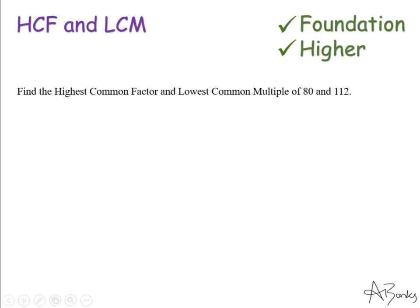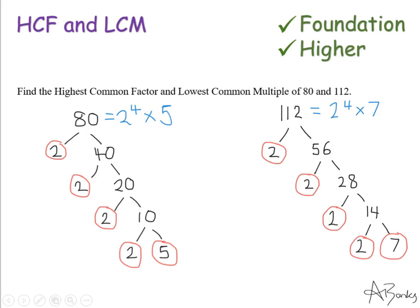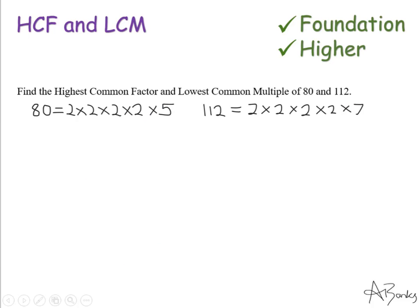The first thing I need to do is their prime factor decompositions. I've covered this in another video, so if you're unsure where these numbers come from, please watch that first. Either way, you should have that 80 is 2 to the power of 4 times 5, and 112 is 2 to the power of 4 times 7. I'm going to write it out fully: 2 times 2 times 2 times 2 times 5 for 80, and 2 times 2 times 2 times 2 times 7 for 112. This will make the next step easier and stop silly mistakes.